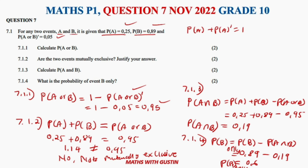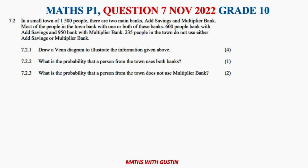Now let's move to question 7.2 — a very nice Venn diagram question. Don't forget there are also tree diagrams to practice. The question says: in a small town of 1500 people, there are two main banks — the AD Savings Bank and the Multiplier Bank. Most people bank with one or both.